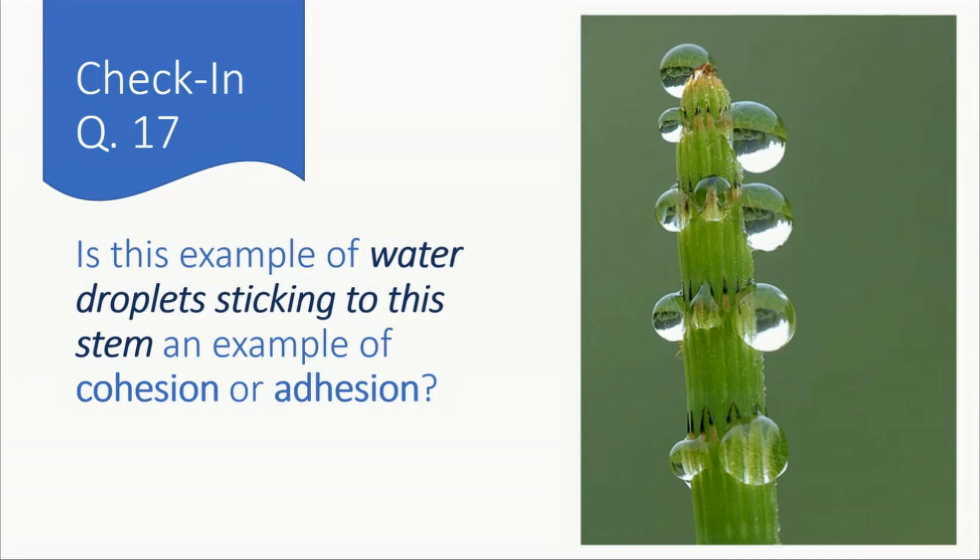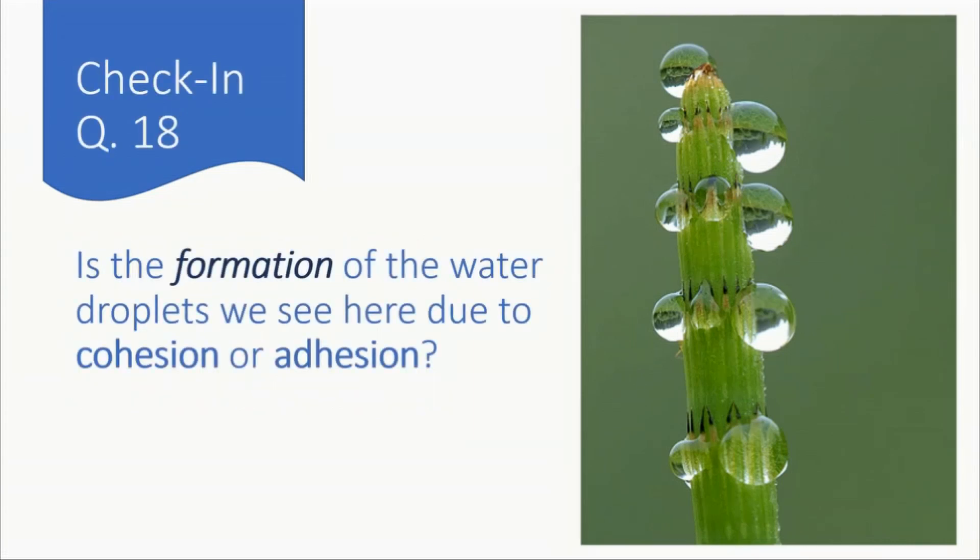So now let's have a very brief check-in, seeing if we understand cohesion versus adhesion. This is number 17, so be careful that you're looking at number 17. Is this example of water droplets sticking to this stem an example of cohesion or adhesion? And number 18 is the formation of the water droplets. So looking at the droplets specifically, is the formation of the water droplets we see here due to cohesion or adhesion?